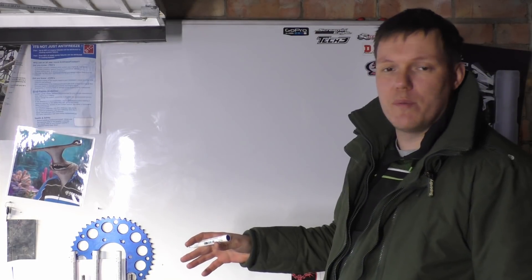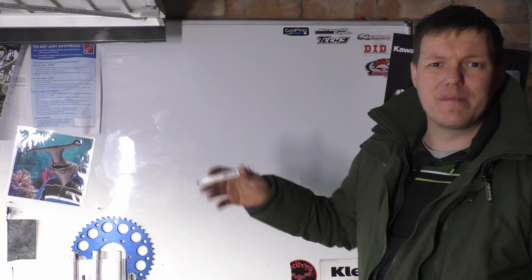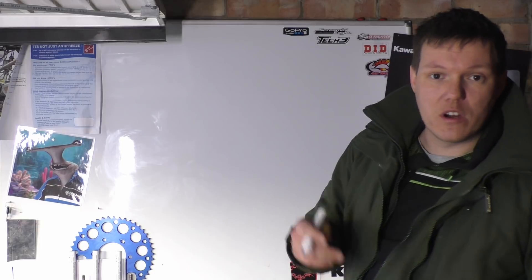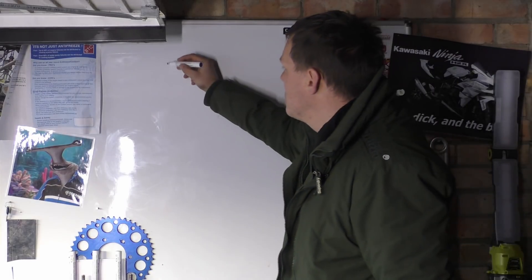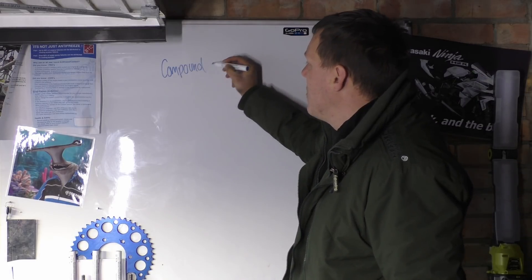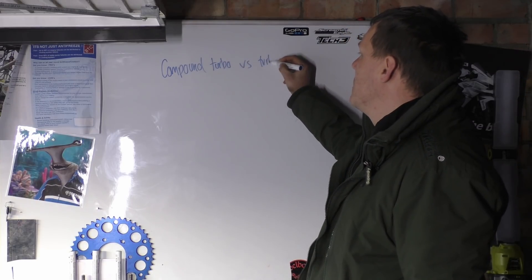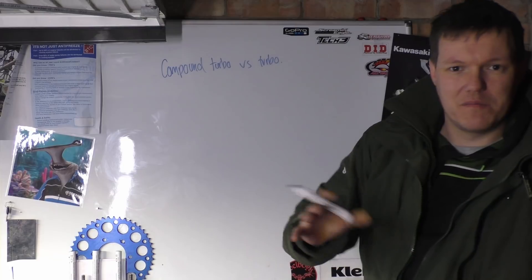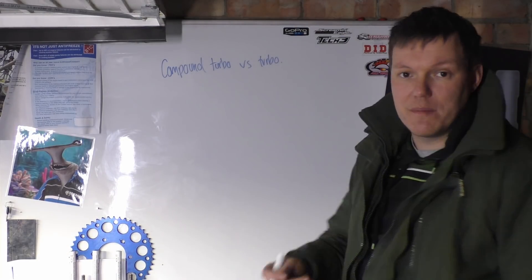Now, we've done compound turbo engines, or the basics of, and I will get on to compounding turbos. But what I wanted to talk about is the difference. It was a question that someone asked, what is the difference between a compound engine, a compound turbo, versus just a regular turbo engine? Basically this guy just asked me, what is the difference? Aren't they basically the same thing?